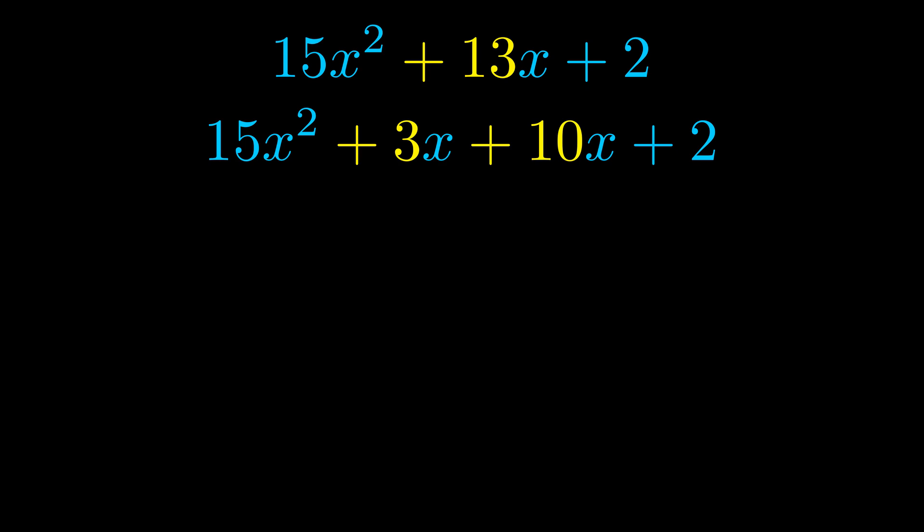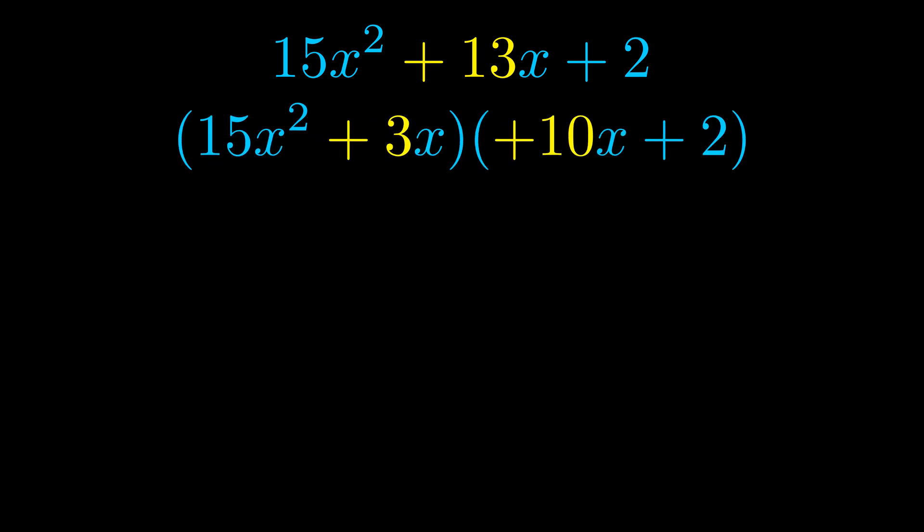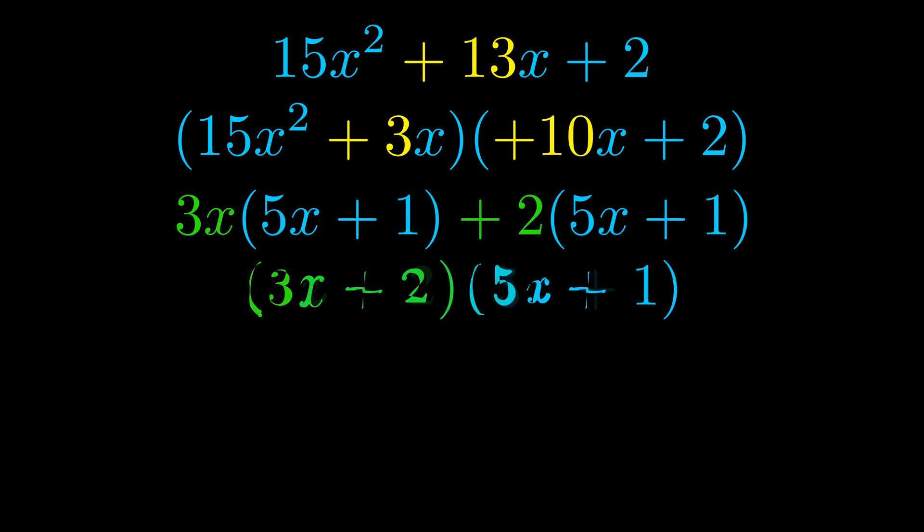Once we've done this we go ahead and we put parentheses around the first term and the last term. And we do that so that we can take the greatest common factor out of both terms. We can see the greatest common factor is now outside in green. Notice also how what remains inside of the parentheses is the same in both cases. The blue values are the same.